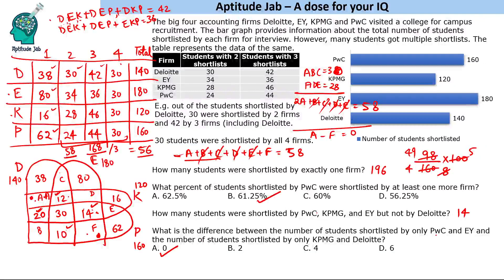This was a tricky question. These last two questions could have been answered without drawing the Venn diagram, by understanding the equations and the number of students. The Venn diagram helps with visualization. This is the complete solution to the four-set Venn diagram problem and the four questions associated with it.